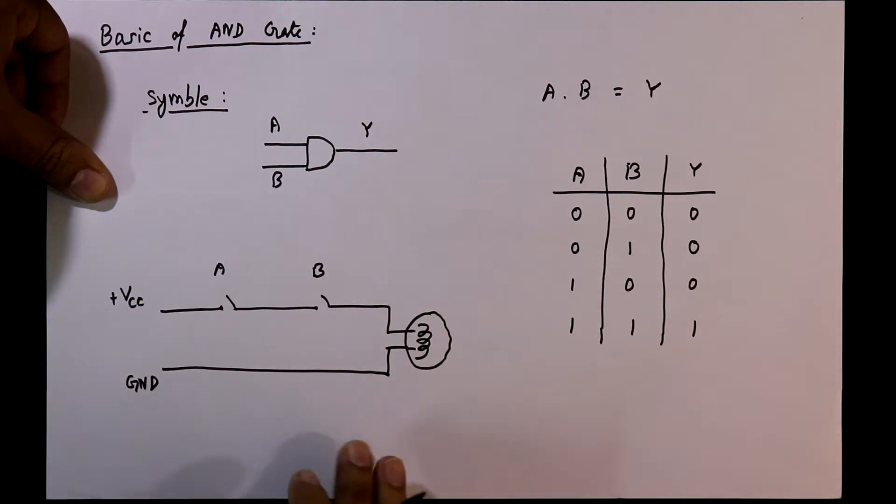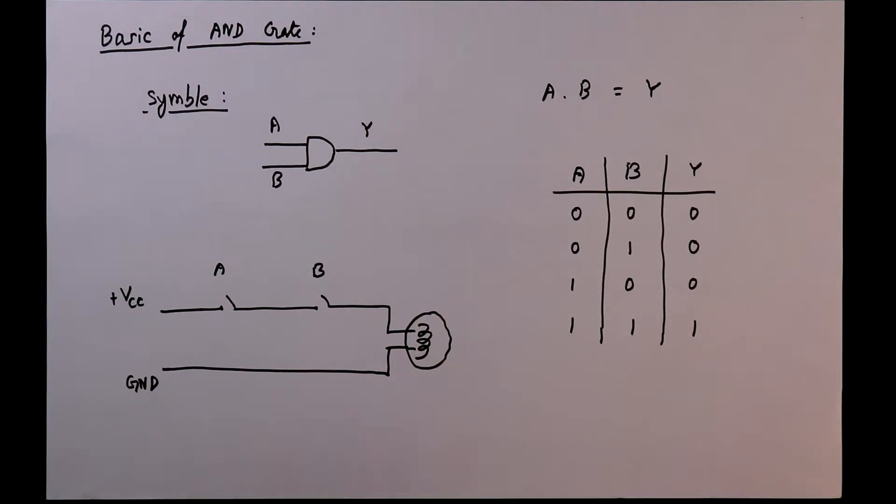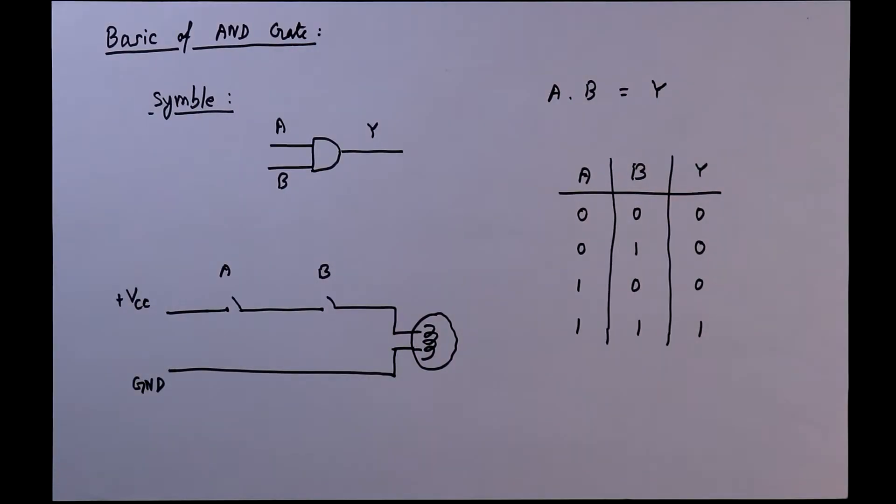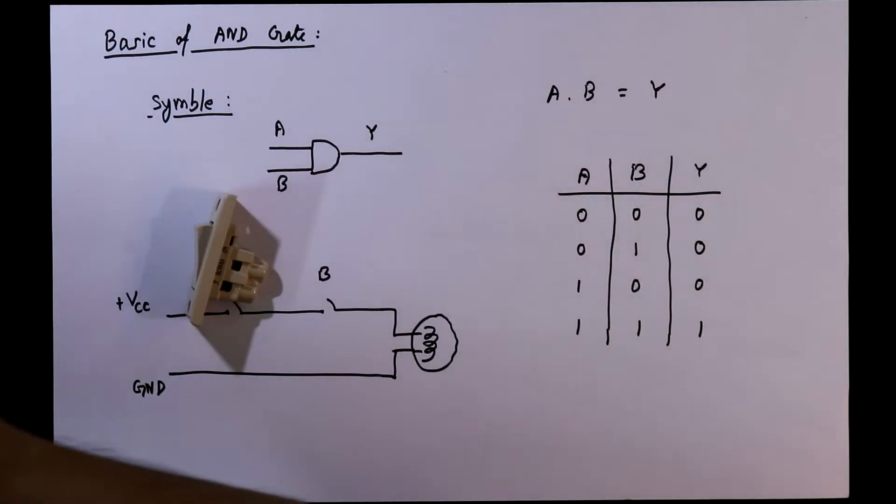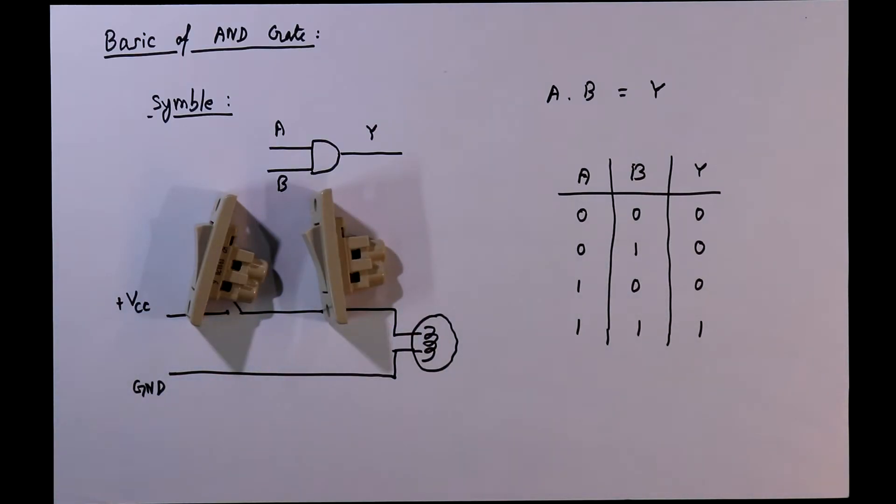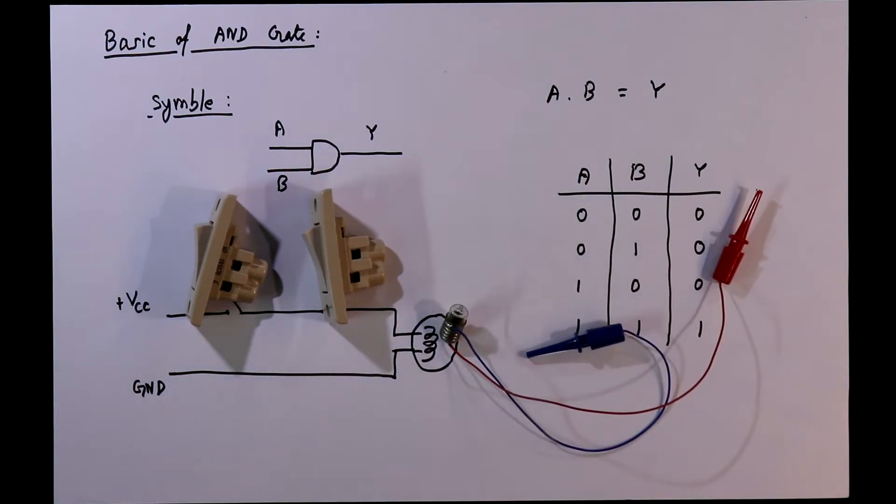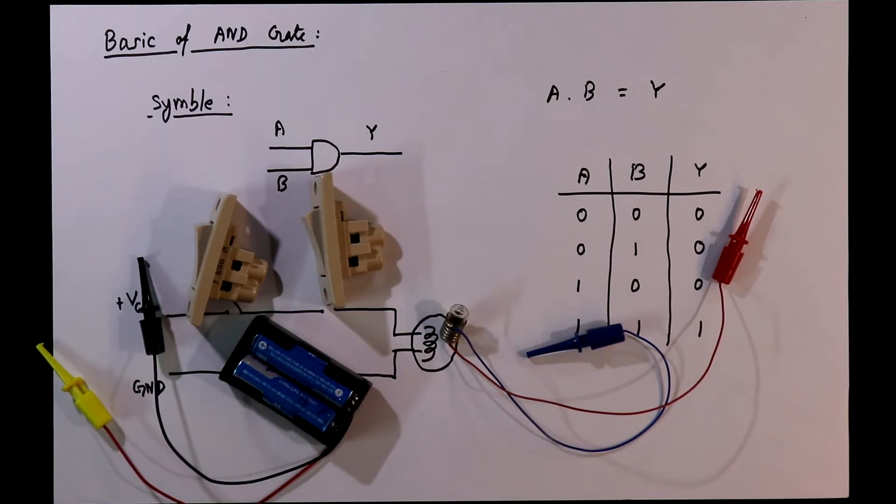Here we'll connect the positive. Now we'll verify this truth table with this circuit. As a switch I'll use this kind of switch, as the output this bulb I'll use, and as a power supply I'll use this pencil battery.